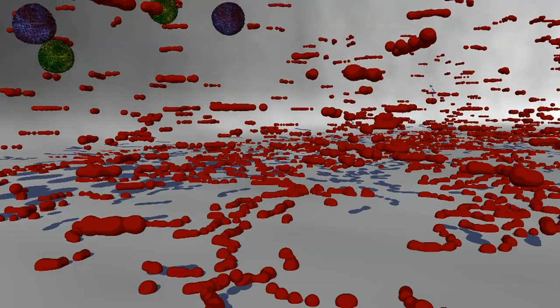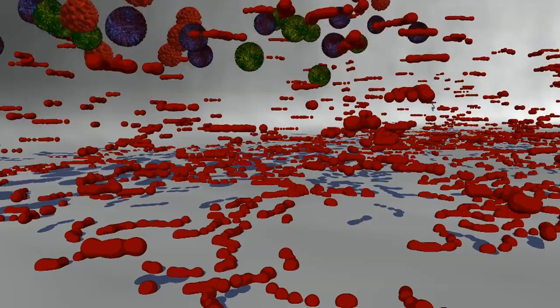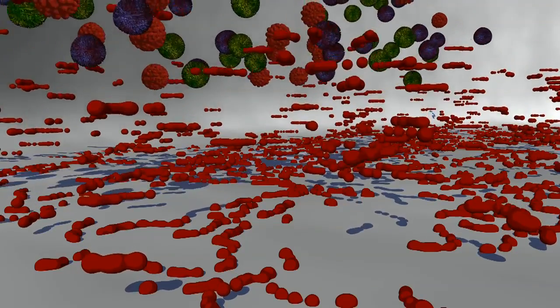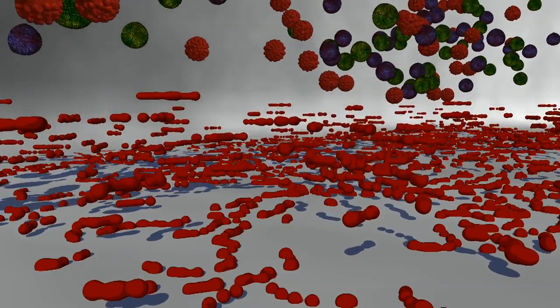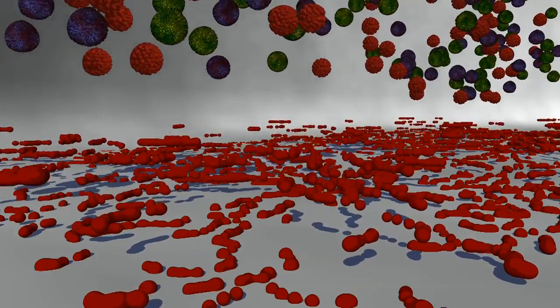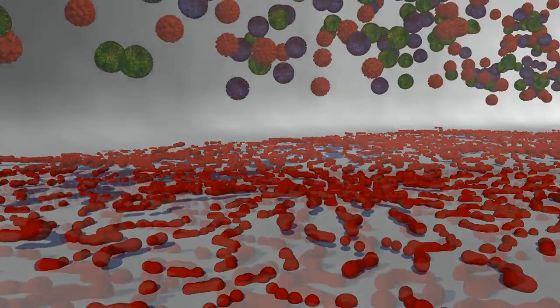Our immune system is really a surveillance system that continually monitors what is us and what is believed to be a foreign invader. It constantly searches out and recognizes germs that would otherwise be harmful or destructive to us.